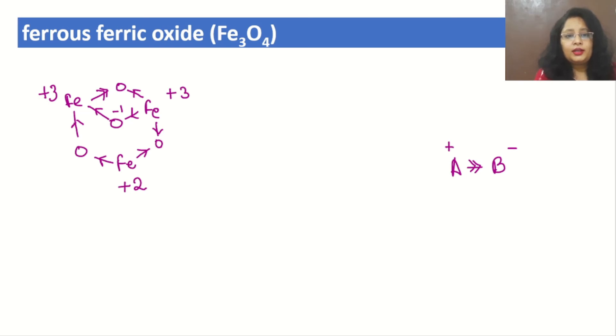We can write -2, -2, -2. And we all know that in general practice, oxygen is always having -2 oxidation state, just leaving exceptions where oxygen is showing -1 or -½. Those are exceptions we will talk about later.